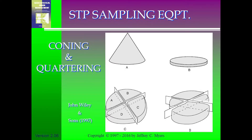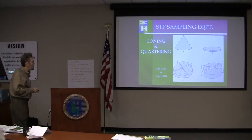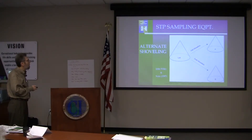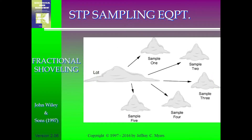With coning and quartering, you make a cone with your shovel, pile it up, flatten it out, divide it into four roughly equal pieces, then randomly select one and go from there. It's very simple and cost-effective. You have to be careful — you typically get the large particles around the base of the pile. Alternate shoveling makes two piles, so you use a coin instead of a die. Fractional shoveling makes five or six piles. These methods are cheap and fairly quick, though not quite as accurate as other approaches.